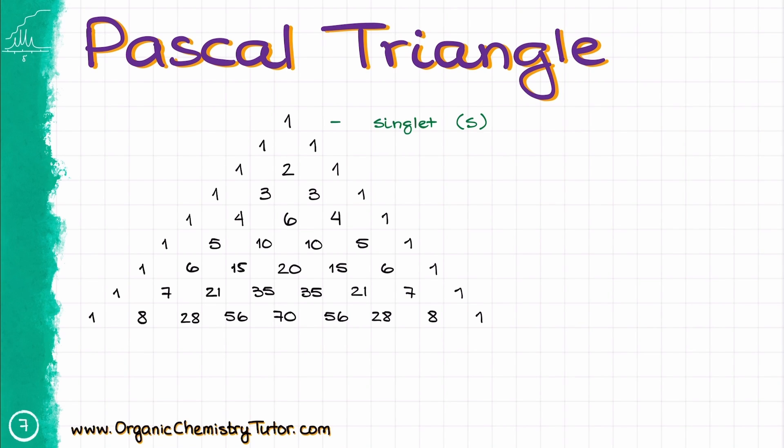So, the singlet will only have one peak. The doublet will have both peaks with the same height. Triplet's middle peak will be twice as high as the outside peaks. Quartet, however, the inner peaks for the quartet are going to be three times the height of our outside ones,